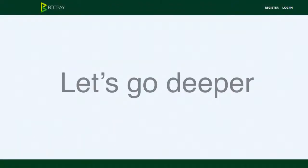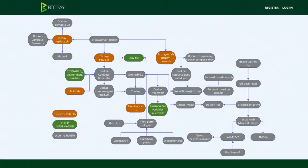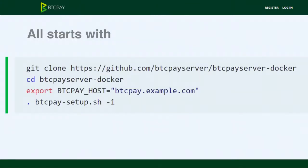There are so many concepts, so I did a kind of mind map — don't be scared, it's actually easy. Everything starts with four command lines: clone the repo, go inside, set up some environment variables, run btcpay-setup.sh, and it just works. What does btcpay-setup.sh do? It doesn't do that much. It installs Docker and Docker Compose for your system, runs a Docker Compose generator, creates environment variables used by your containers, makes sure BTC Pay will restart if you reboot your machine, and puts some tooling scripts inside /usr/bin, then starts the service. It's a pretty small script — about 300 lines of code, very easy to review.